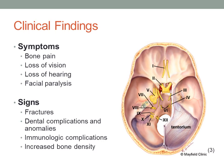Generalized symptoms of osteopetrosis include bone pain, loss of vision and hearing, and oftentimes facial paralysis. Signs associated with the disease are fractures, delayed tooth eruption, dental anomalies, increased susceptibility to bacterial infections, and osteomyelitis. Severity of the signs and symptoms depends on the form of the disease under consideration. The picture on the right depicts how an increase in bone growth in the cranial vault could compress neurovascular canals, including those containing the cranial nerves.